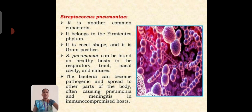The second best example for eubacteria is Streptococcus pneumoniae. It is another common eubacterium. It belongs to the Firmicutes phylum. It is coccus-shaped and Gram-positive. Streptococcus pneumoniae can be found in healthy hosts in their respiratory tract, nasal cavity, and sinuses. The bacteria can be pathogenic and spread to other parts of the body, often causing pneumonia and meningitis in immunocompromised hosts.